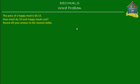Welcome to homecampus.com.sg. Let's solve this word problem. It says that the price of a happy meal is $4.15. How much do 10 such happy meals cost? Round off your answer to the nearest dollar.